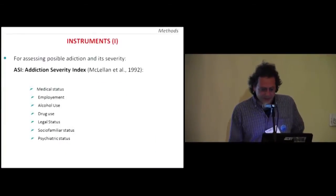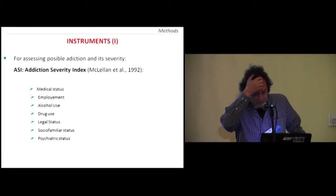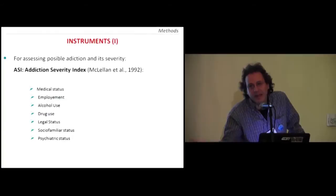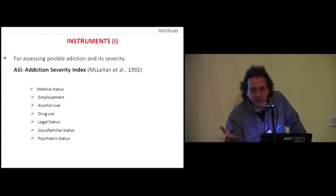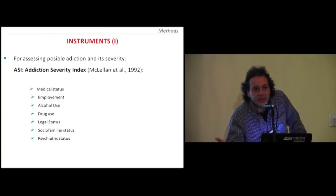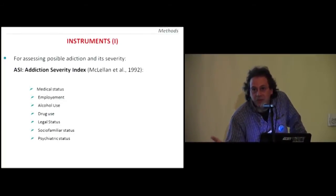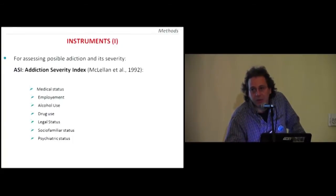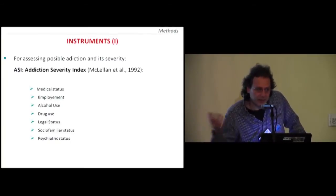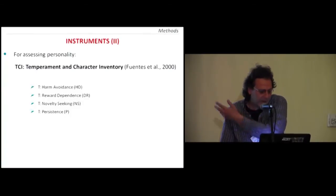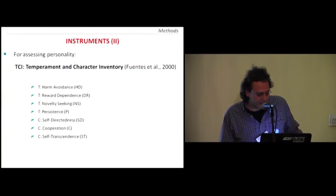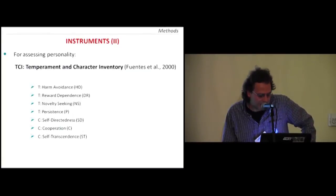In Mapia, Boca do Acre, and Rio Branco, we first used a test to assess possible addiction and its severity. Everybody here knows that ayahuasca does not produce addiction like another drug, but the scientific community necessarily doesn't know what all of you probably already know. We also used a test to assess personality, the Temperament and Character Inventory, that has two main dimensions with subscales: harm avoidance, reward dependence, novelty seeking, and persistence; and three dimensions of character: self-directedness, cooperation, and self-transcendence.